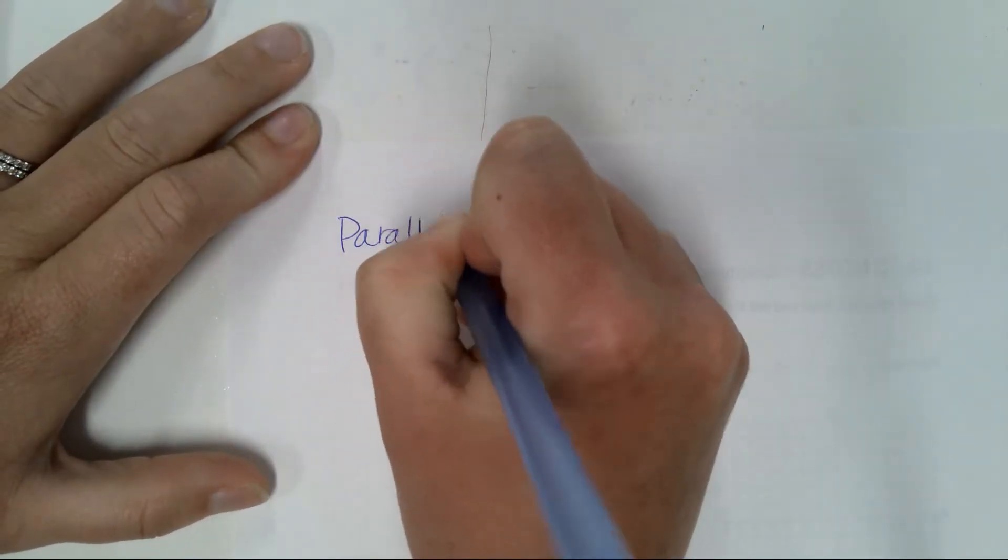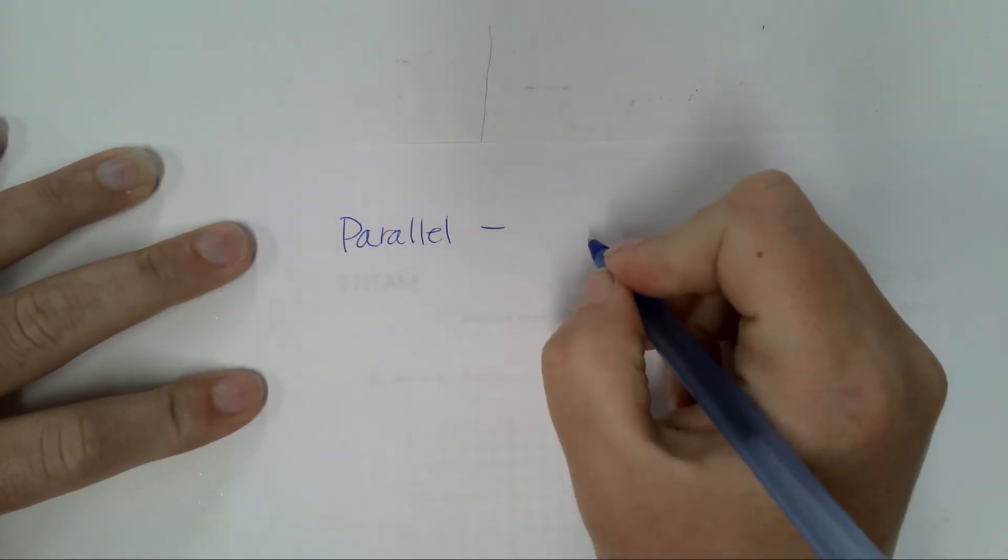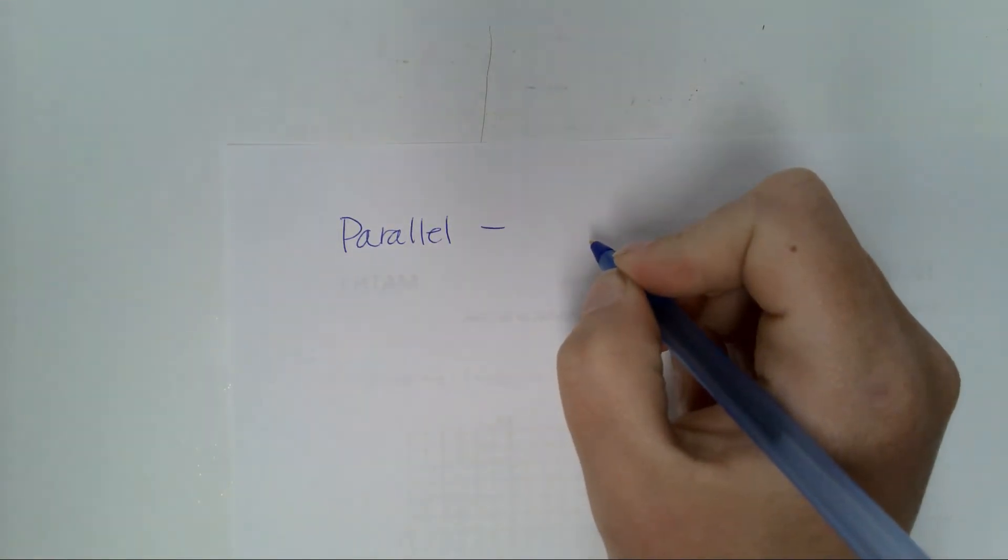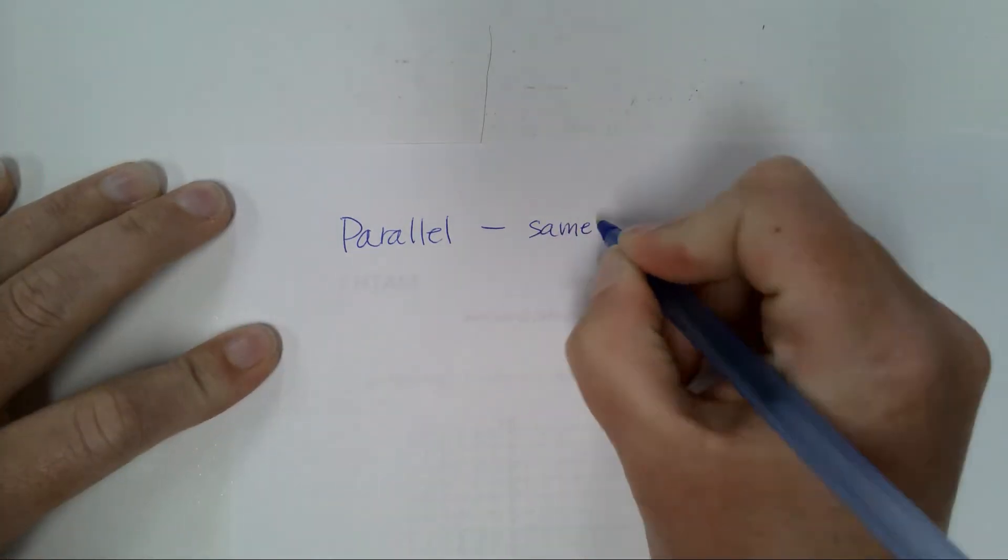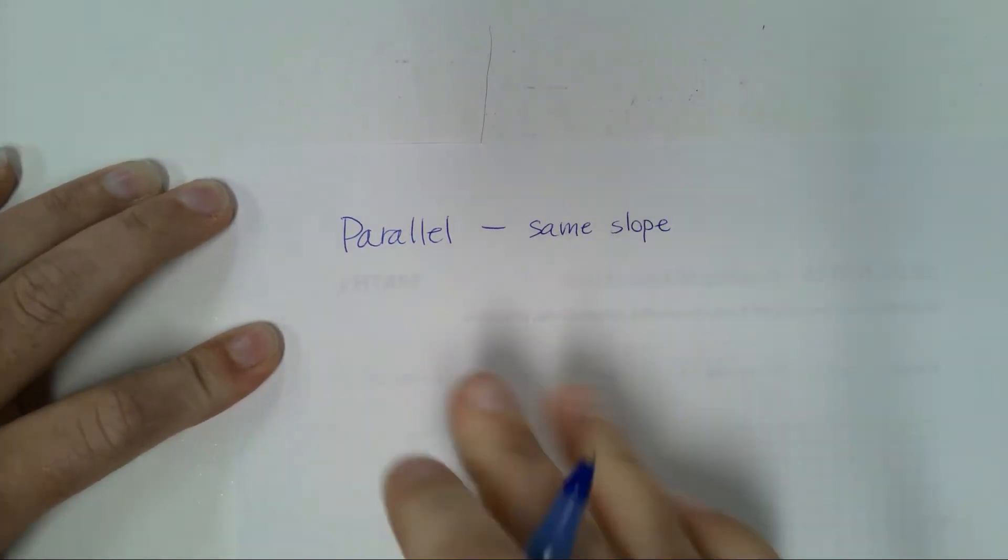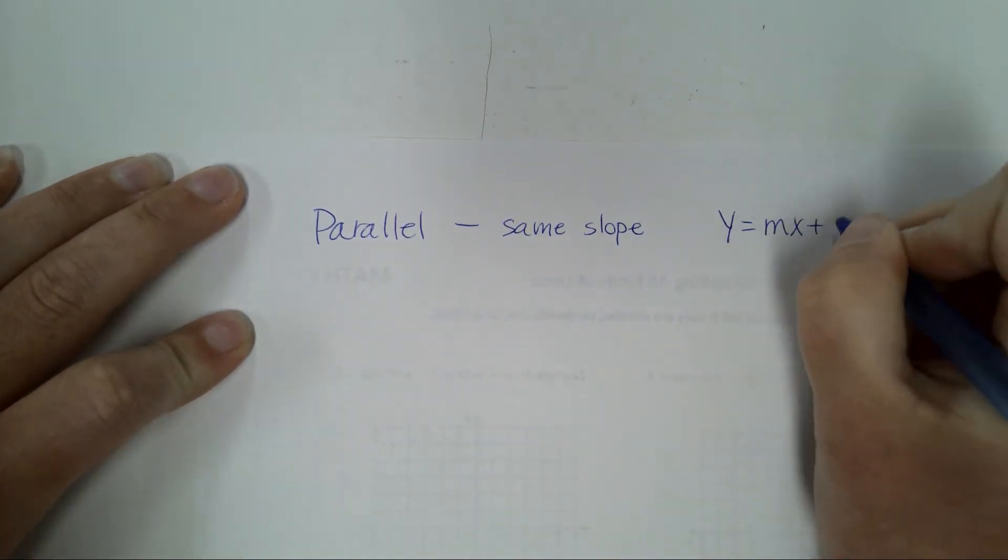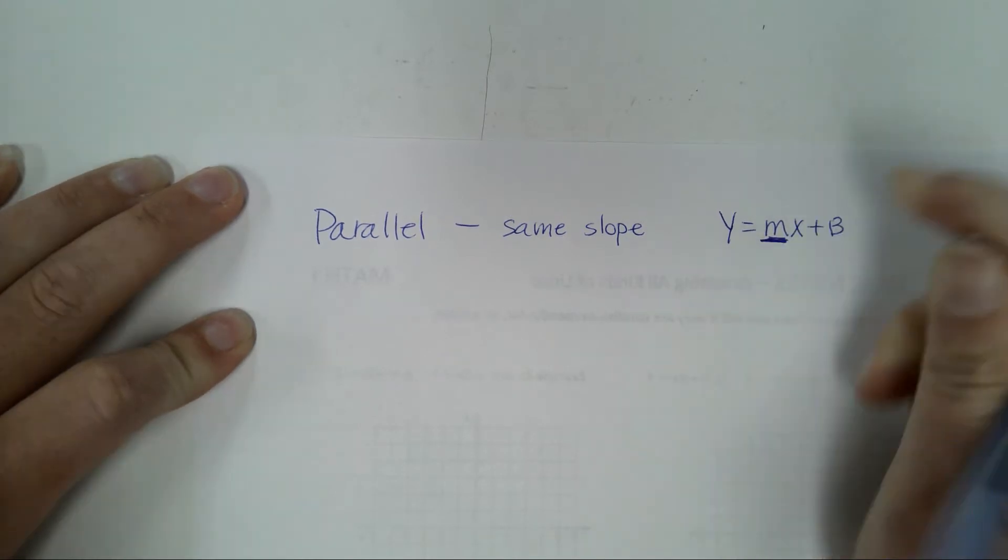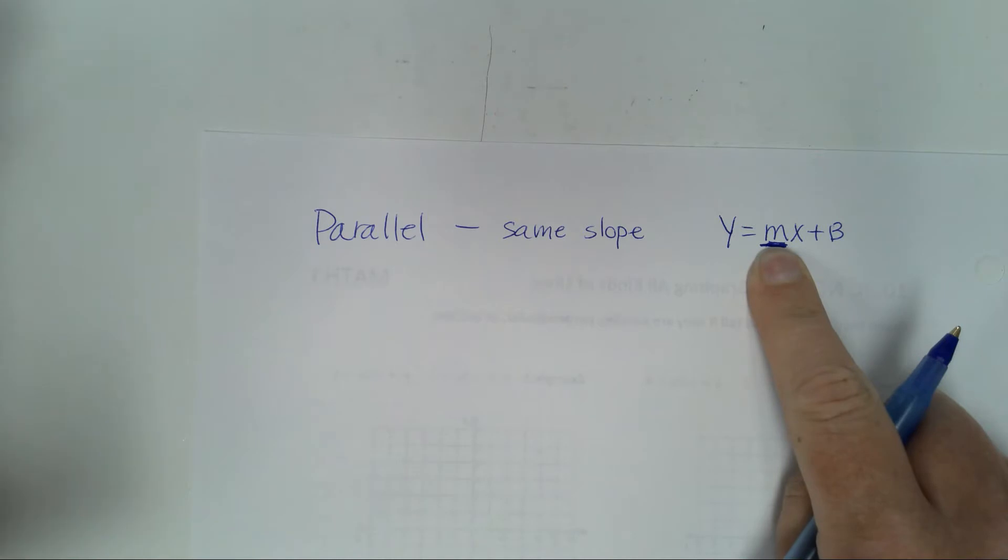I want us to notice parallel lines. What's so special about their slopes? They never intercept, but what's so special about their slopes, the actual number? They're the same, the exact same slope. That is so easy to spot. When you're looking at y equals mx plus b, you're looking for numbers that have that place right there are the same.